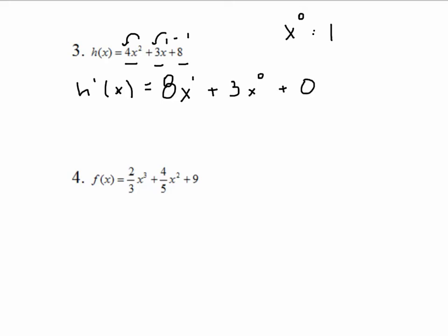And then the constant of 8, the derivative of that is 0. So I kind of write out this funky derivative, because we will not leave it like that, but I want you to see how it follows the rule. What we will write as our answer is very simply 8x plus 3.